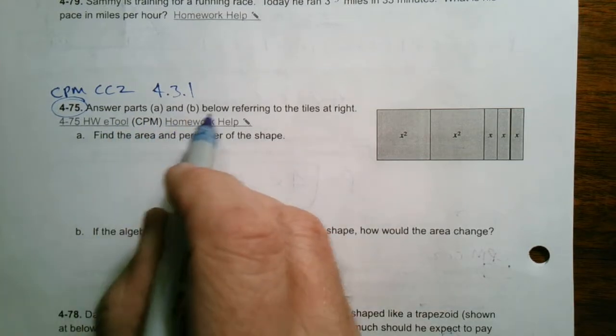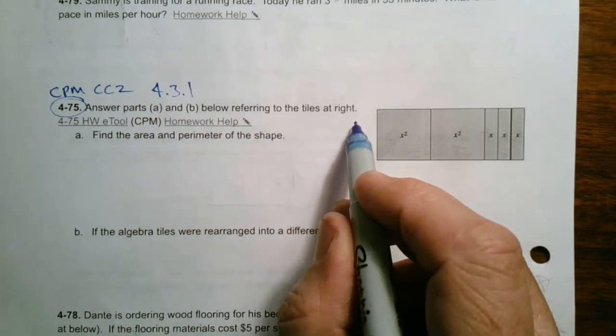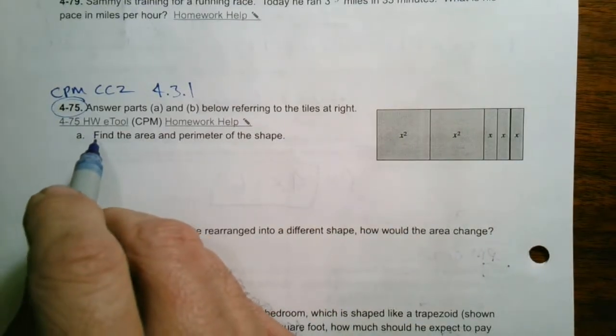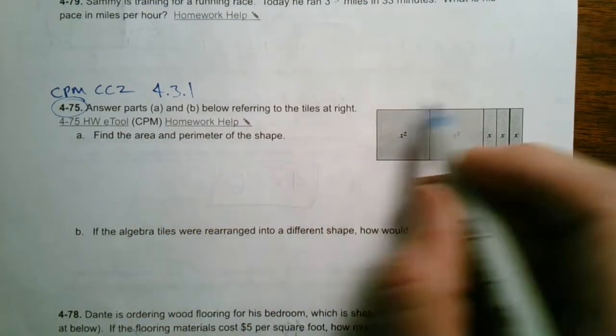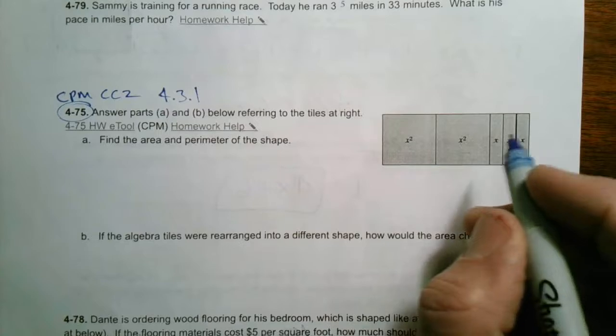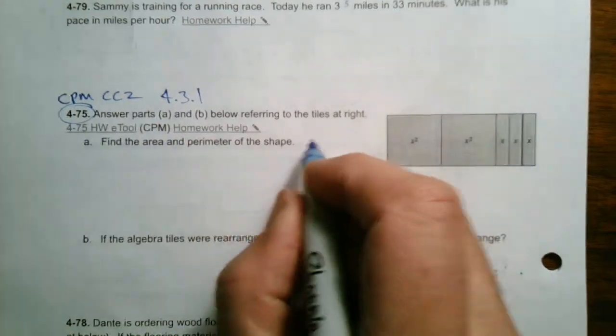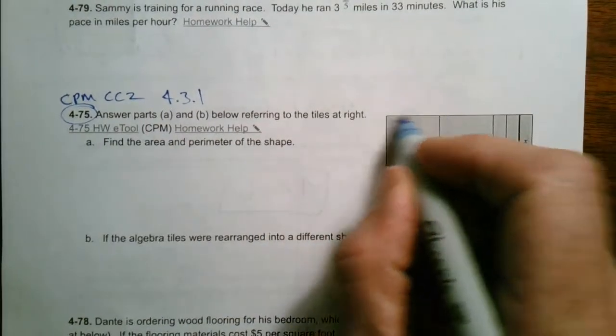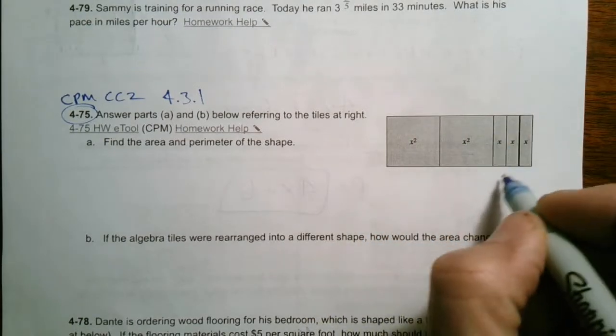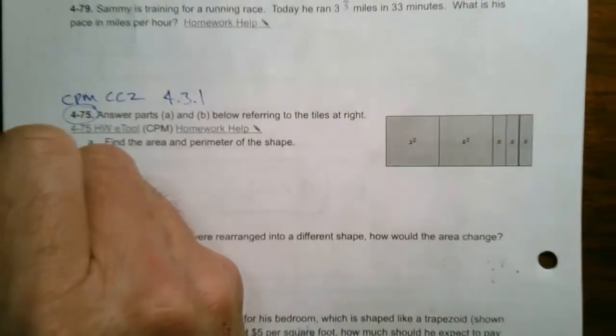It says answer parts A and B below, referring to the tiles at right. So it says find the area and perimeter of the shape. Here's what I have, and just a reminder. With algebra tiles, you have three different tiles: your x-squared tiles, your x-tiles, and then also your unit tiles.